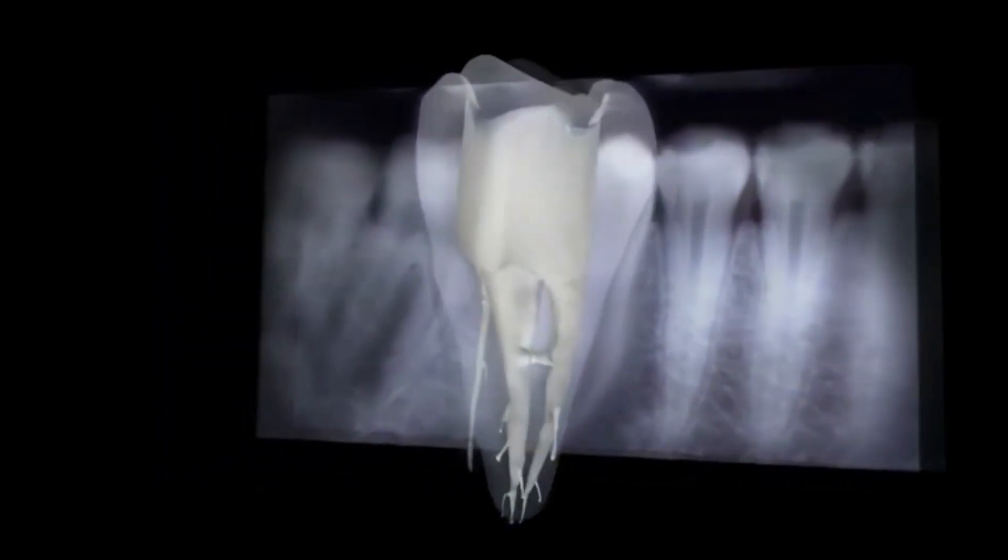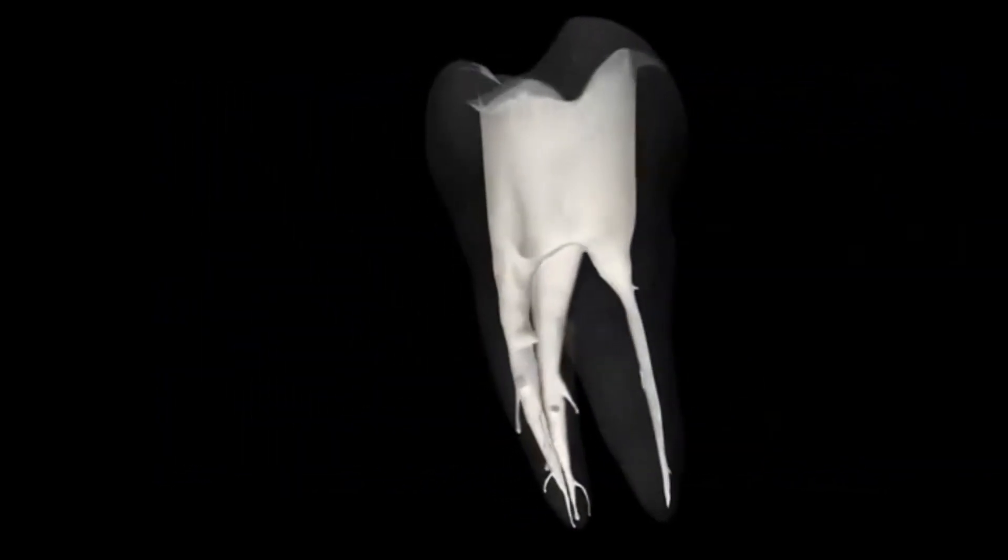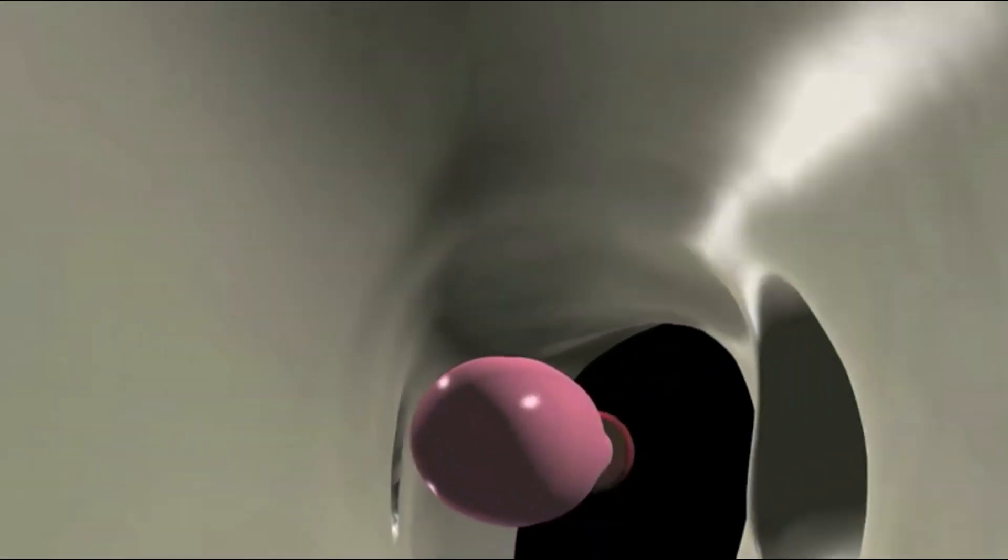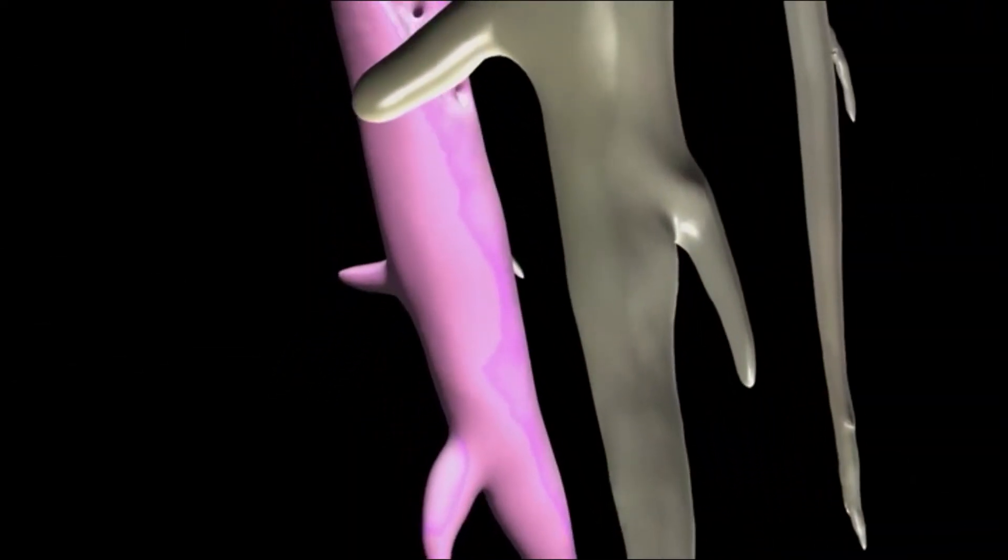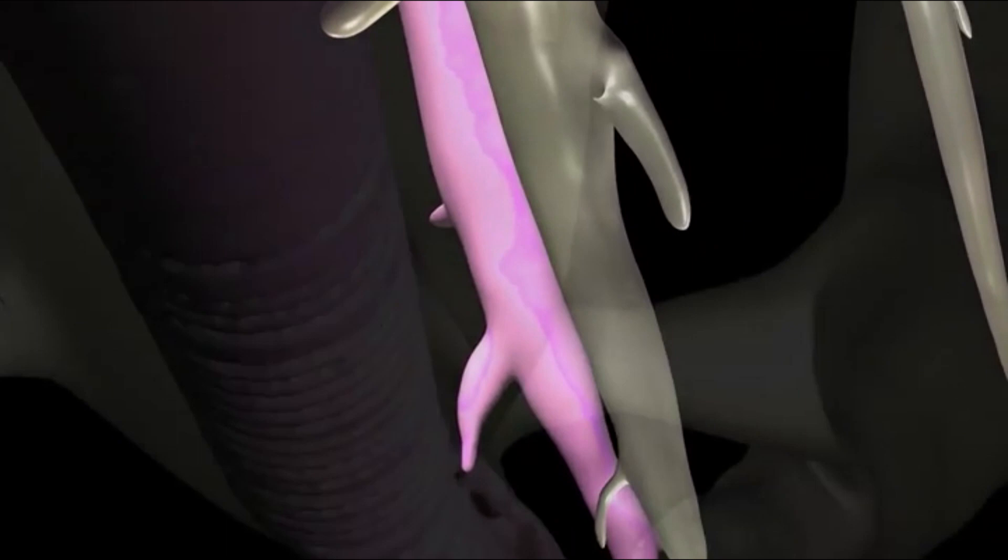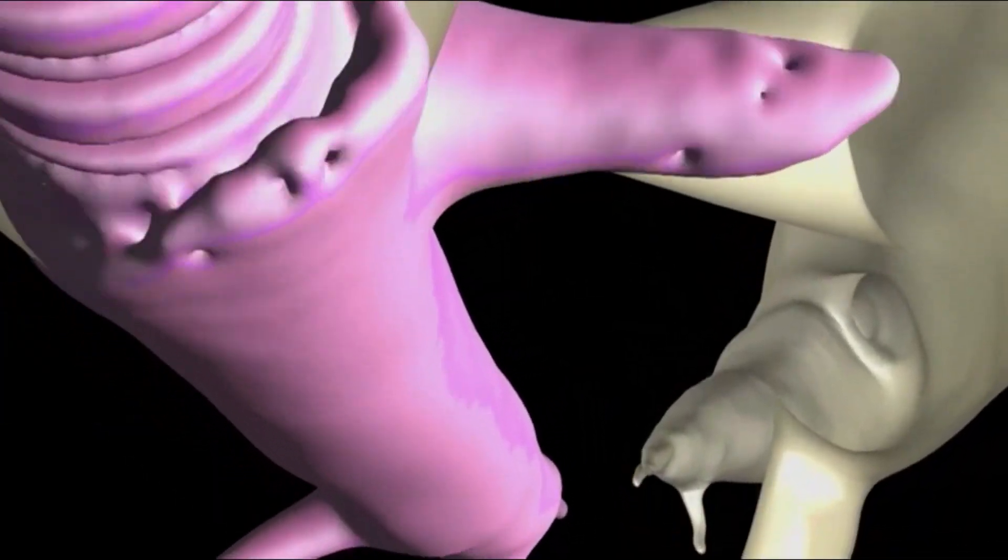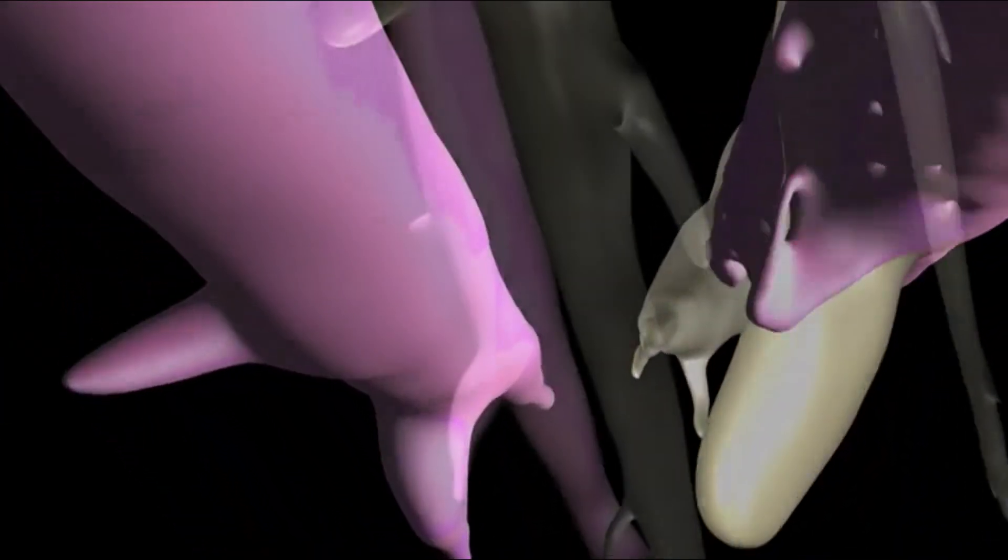Place GuttaCore into the root canal system in one smooth motion without excessive force. The cross-linked Gutta-percha core centrally compacts the alpha-phase Gutta-percha with a hydraulic force that sends it flowing in three dimensions into laterals, isthmuses, and accessory canals.